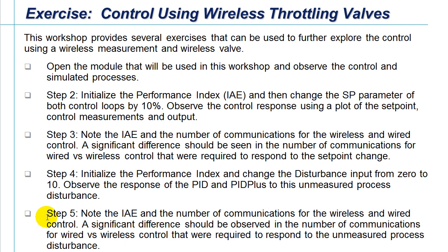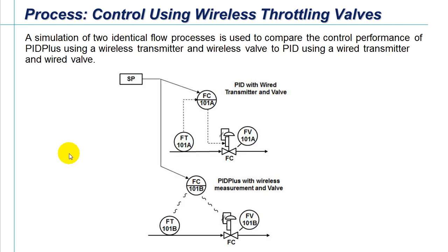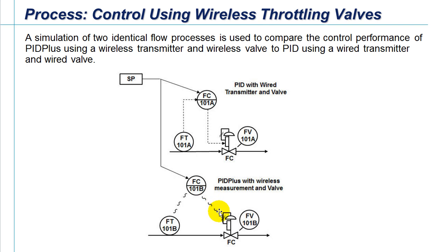For this workshop, we're simulating two flow processes — one controlled by wired and one controlled wirelessly. The process that has wired input is using PID to adjust the wired output. PID Plus is used for control using a wireless flow measurement, and its output is going wirelessly to a throttling valve, so both the input and output for the PID Plus are wireless.